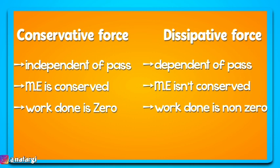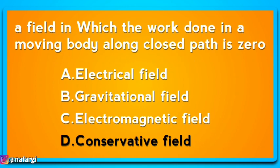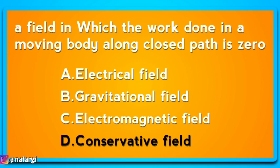For a conservative field, the work done over a closed path is zero, and mechanical energy is conserved. The electric field, gravitational field, and electromagnetic field may all qualify, but the conservative field is the one defined by the closed-path condition where work done equals zero and mechanical energy is conserved.